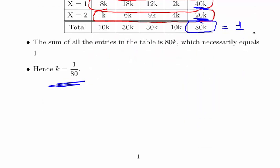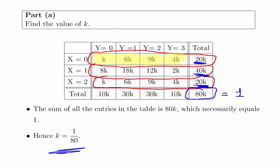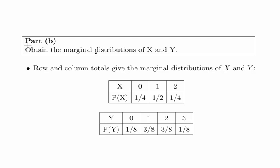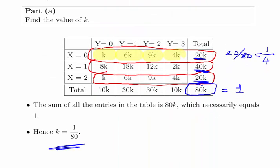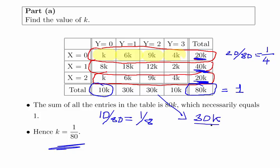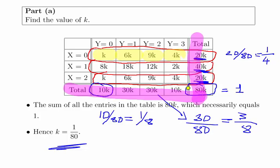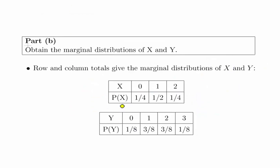Part B asks us to obtain the marginal distributions of X and Y. Essentially, add up all the rows and all the columns. For example, one row gives 20 over 80, which is one quarter. Another gives 10 over 80, which is 1 over 8, and another gives 30 over 80, which is 3 over 8. You have to do this for all columns and all rows.